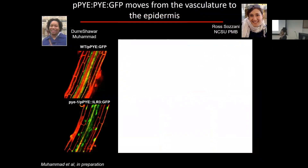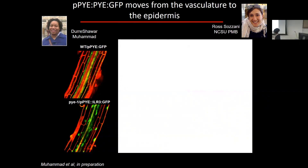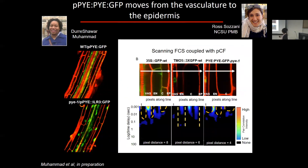To gain insight into the molecular mechanisms of how Popeye functions, we've looked at the dynamics of Popeye's activity. My graduate student Duri Shawar Muhammad teamed up with Reza Sousani to look at the dynamics and movement of Popeye. When we make a transcriptional fusion, Popeye is expressed predominantly in the vasculature. But when we look at a translational fusion — where we can see the protein — it appears to be localized in all cell types, suggesting the protein moves from the vasculature to all cell types.